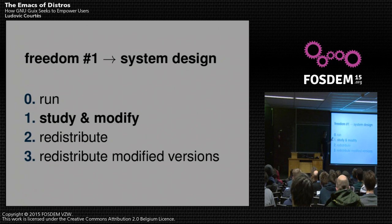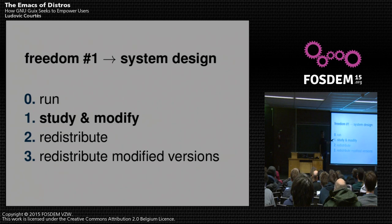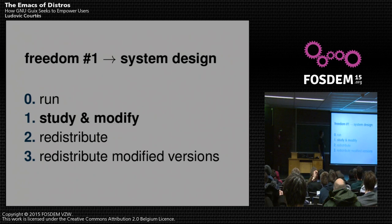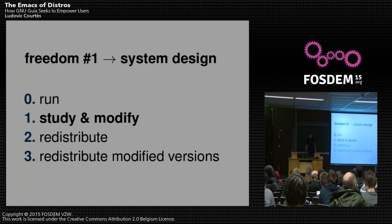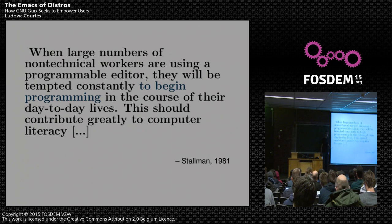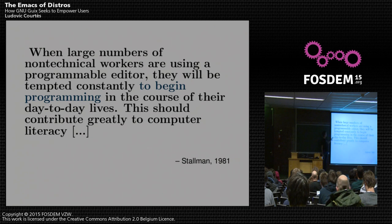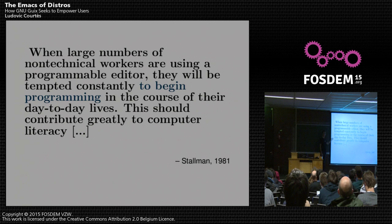What we can do from a technical viewpoint is to make the first freedom more practical. The idea for Emacs is basically you take freedom number one and you map it to a concrete system design. That's what we're trying to do with the Geeks package manager. If we look at early writings by Richard Stallman about the design of Emacs, he was saying that with a programmable editor, people would end up programming without really noticing. And so this helps improve computer literacy — a fashionable word these days, but this is a writing from 1981.